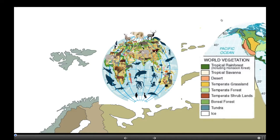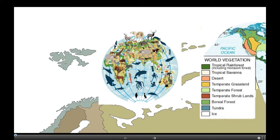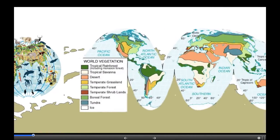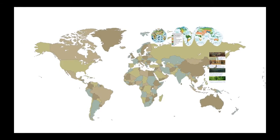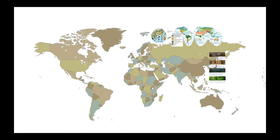The biogeographic patterns of animals and plants have been well understood. A lot of studies have also shown that microorganisms display spatial geographic patterns, but little is known regarding the influence of natural vegetation on these patterns.